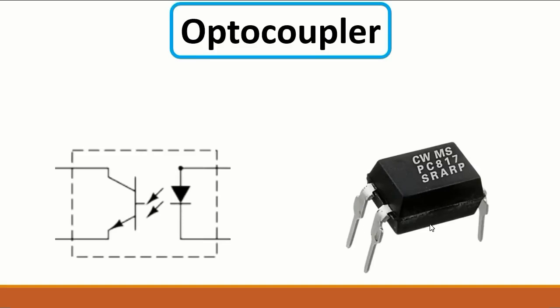To check an optocoupler, you test its two sections: the diode side and the transistor side, using the same working principles as when testing a diode or transistor. I also have a specific video on how to test optocouplers — also called opto-isolators — which covers everything you need to know about them.